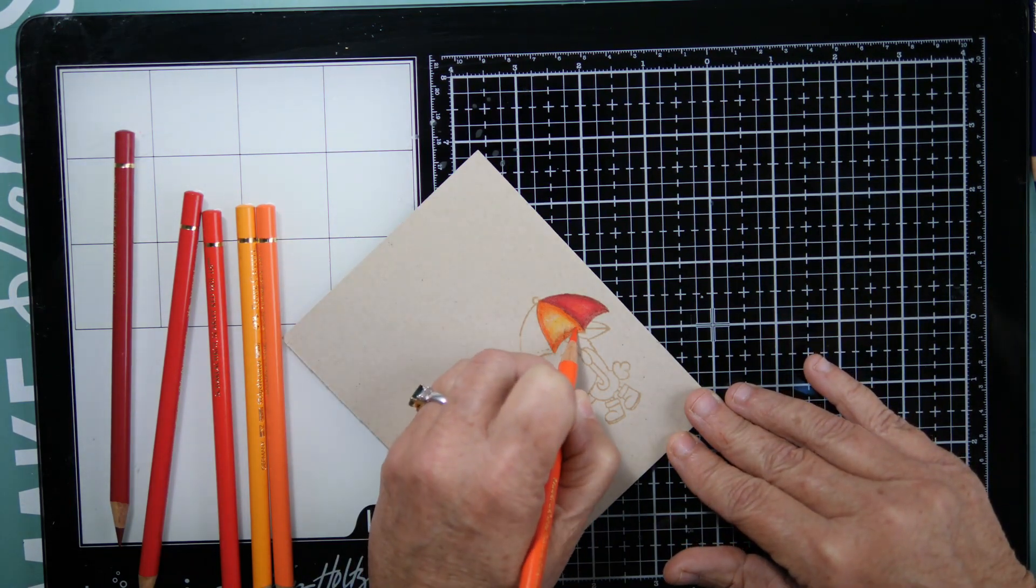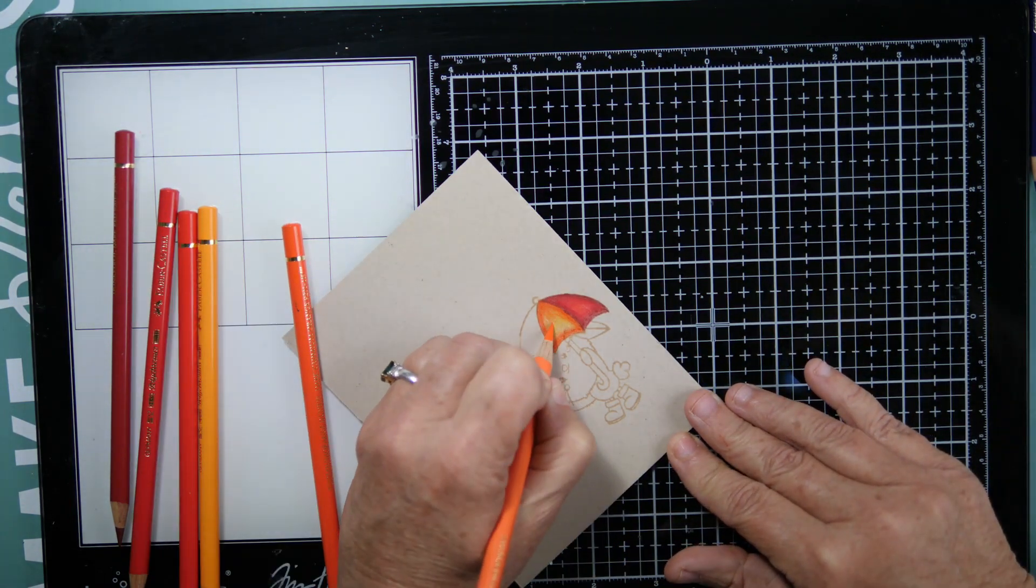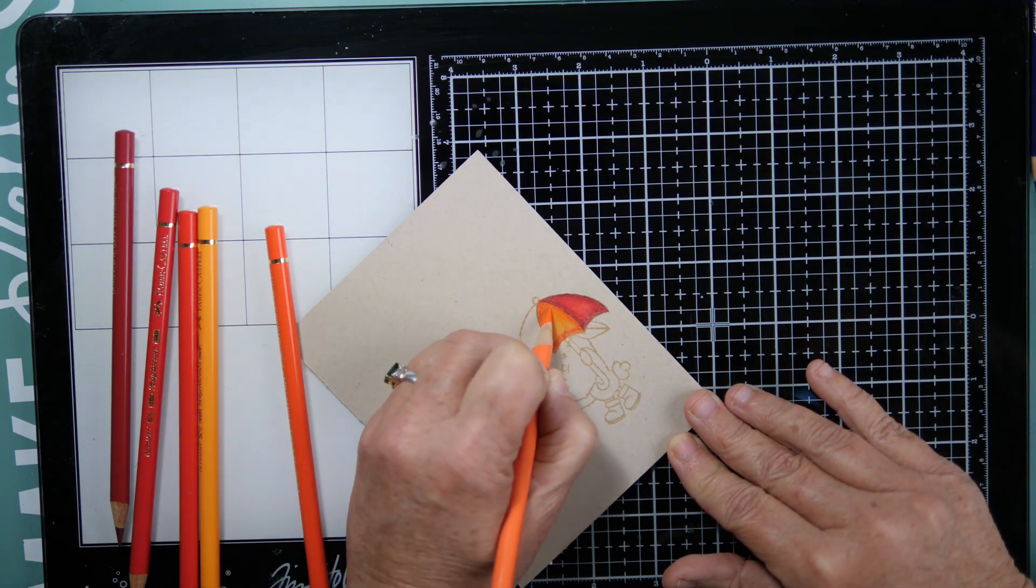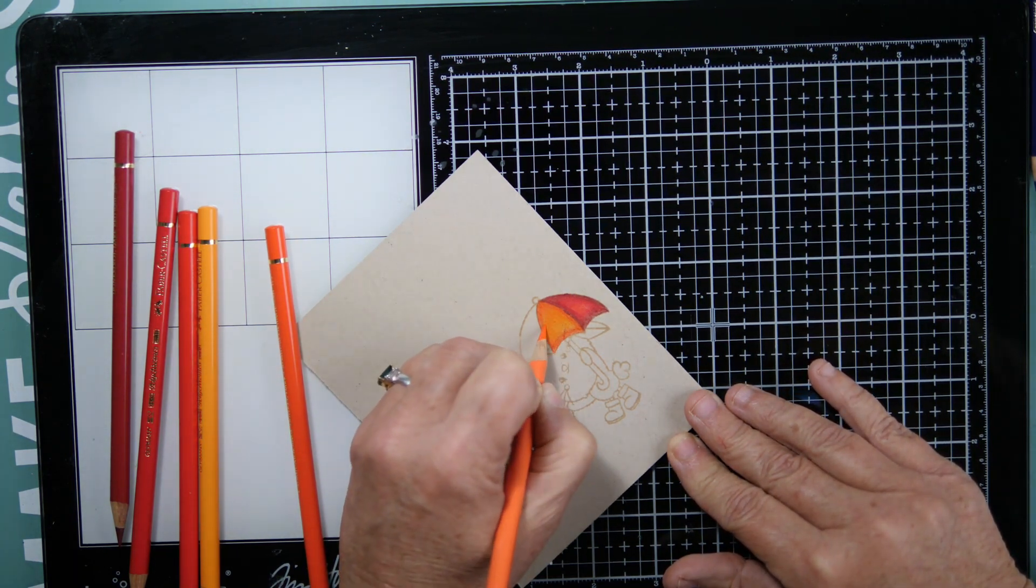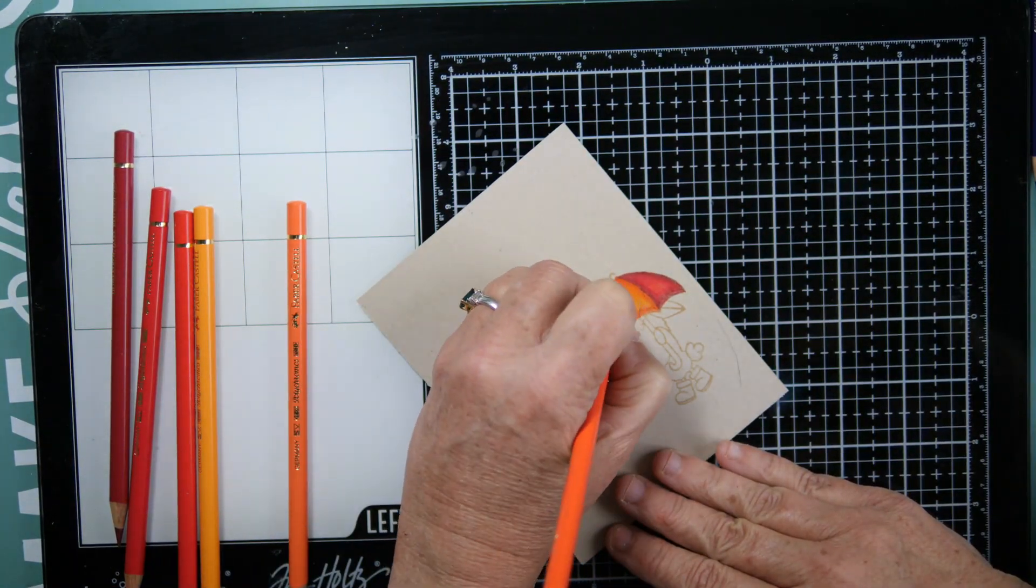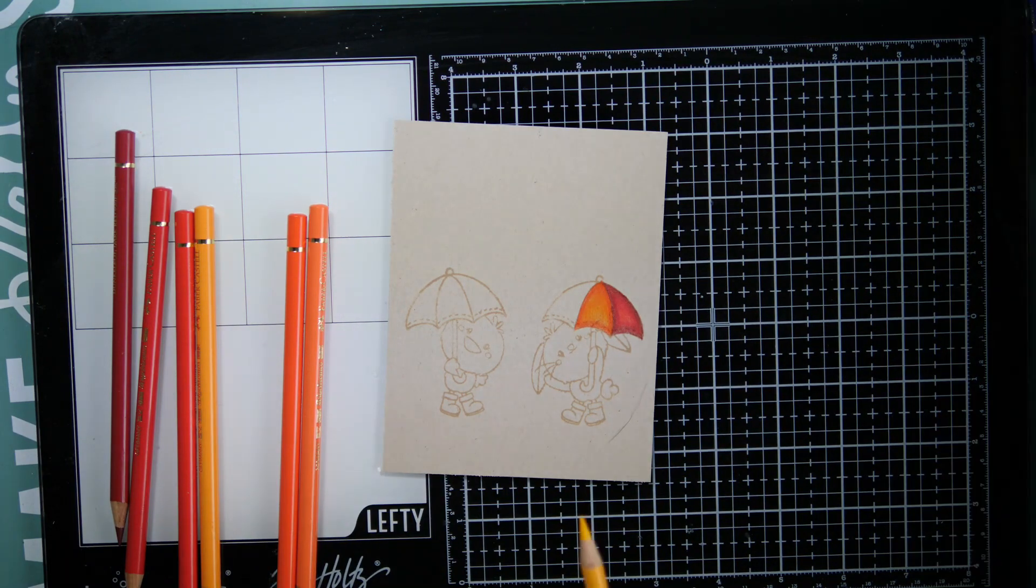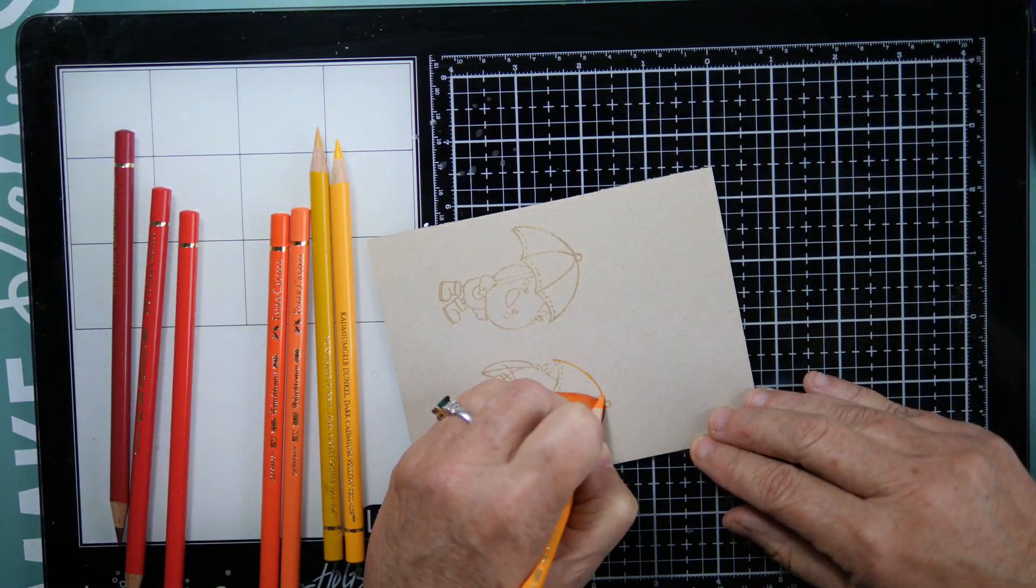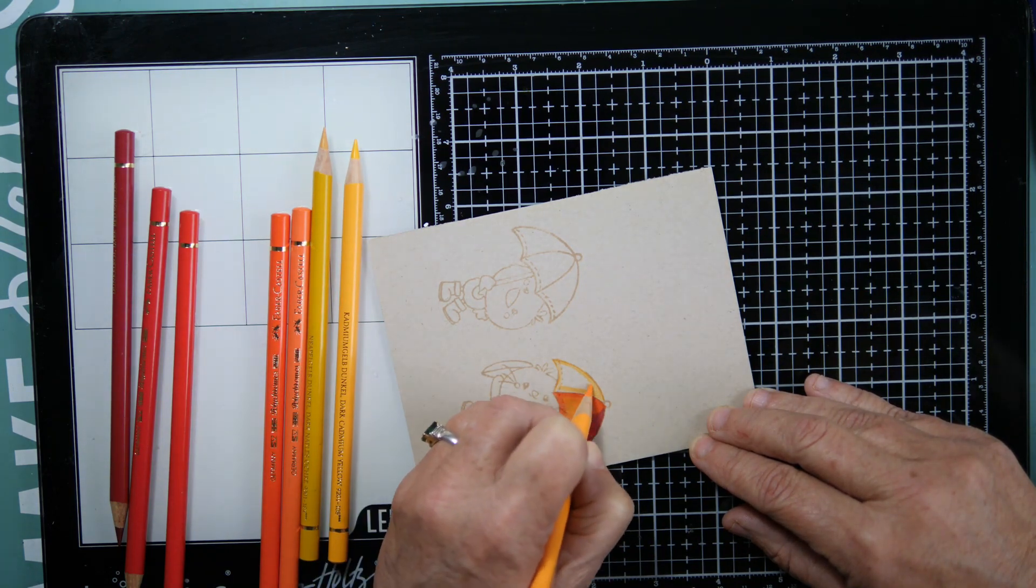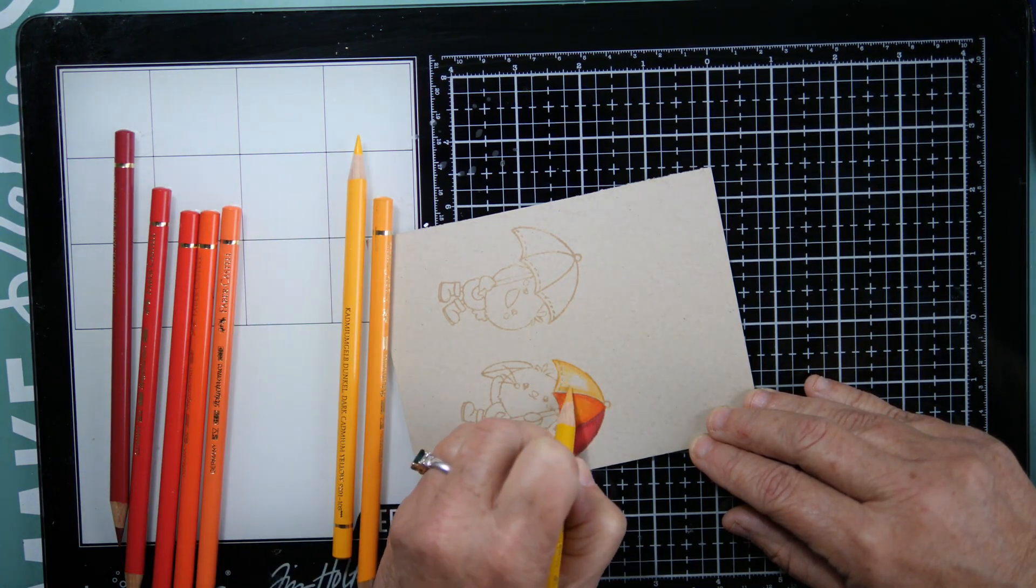On the first card that I did, I was super happy with the way that the critters came out. I just wasn't happy with some of my color choices, such as right here I'm doing the rainbow order on the umbrellas backwards.